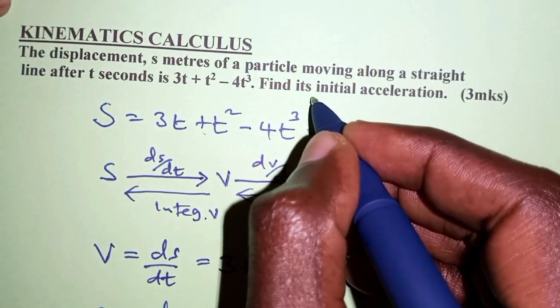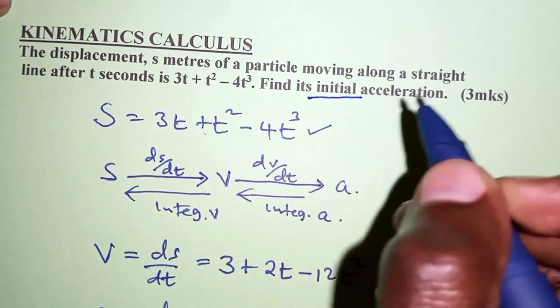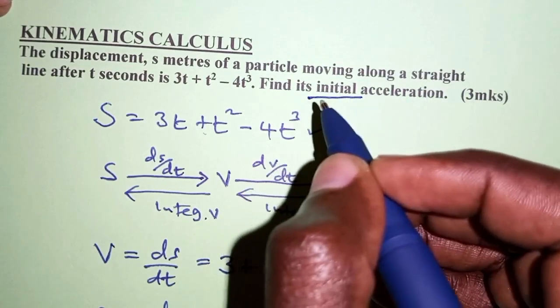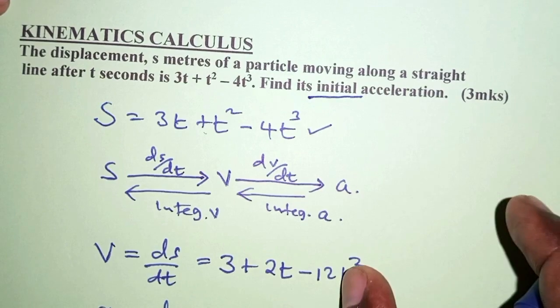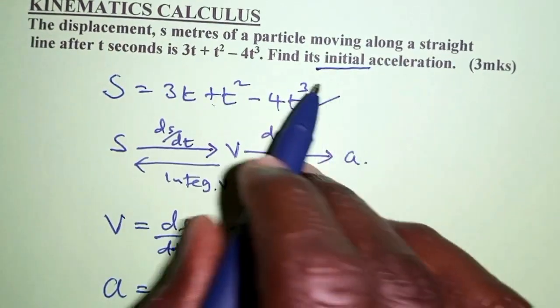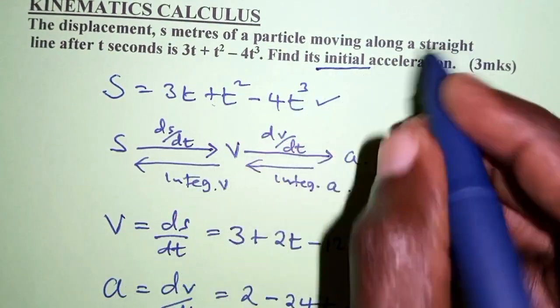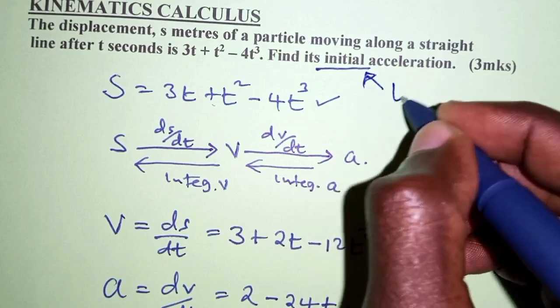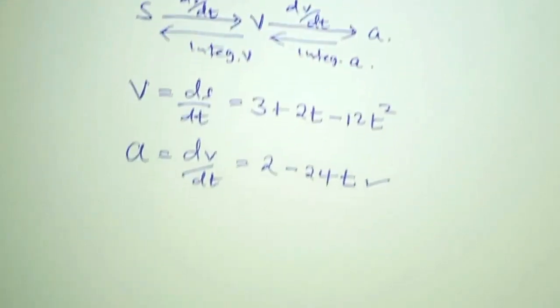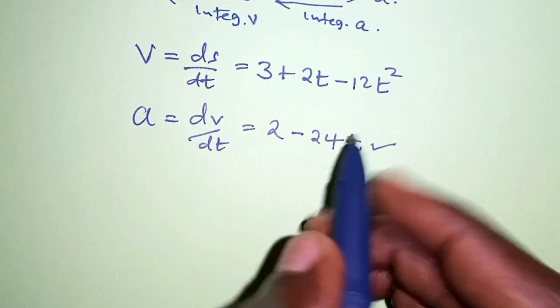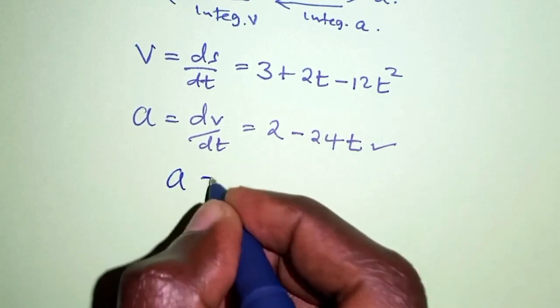So anytime you're talking about initial acceleration, initial velocity, and so on, then it means the acceleration when t = 0. So if t is 0, what is acceleration? So acceleration is equal to...